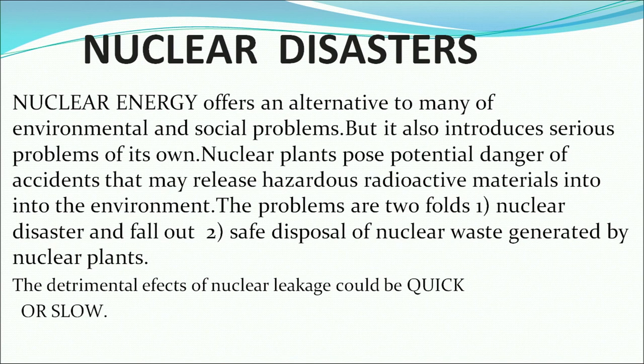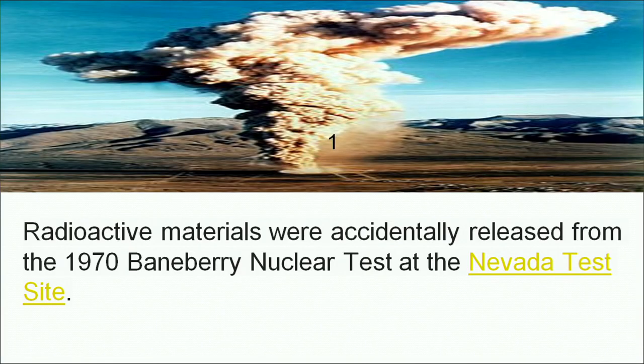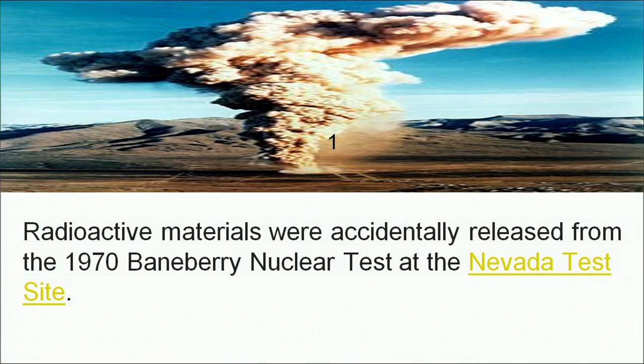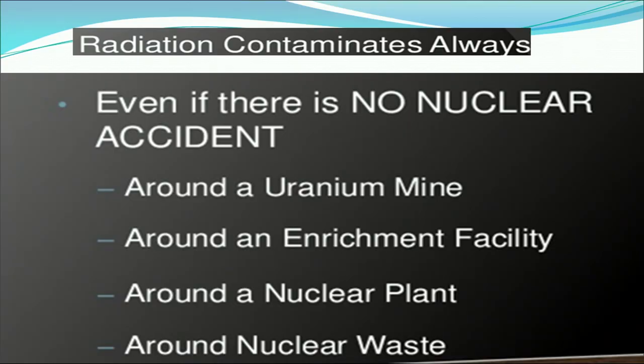The detrimental effects of nuclear leakage could be quick or slow. We are familiar with the Hiroshima and Nagasaki episodes during World War II. Radiation contaminates all waste around uranium mines, enrichment facilities, nuclear plants, and nuclear waste deposition sites. A nuclear test at the Nevada test site also accidentally released radioactive materials.